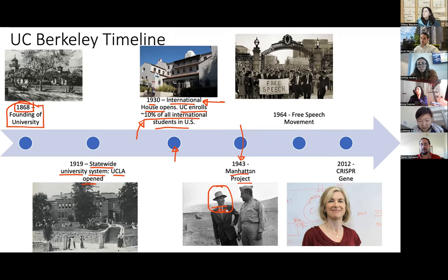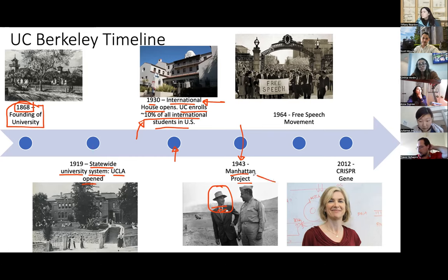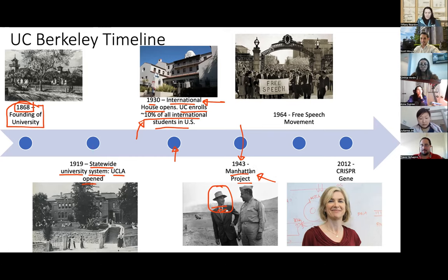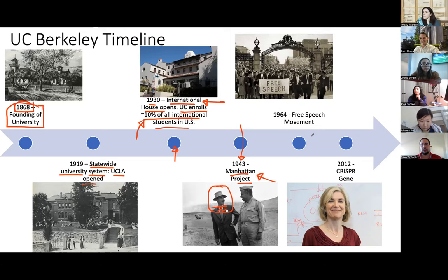Director Christopher Nolan — who did Batman: Dark Knight, Inception — is creating a new film called Oppenheimer and they've been filming on campus here. Go to IMDB and search Oppenheimer: the cast includes Emily Blunt, Florence Pugh, Robert Downey Jr., Cillian Murphy, and Matt Damon. Cillian Murphy plays Oppenheimer, and some of those people have been spending time on campus filming.